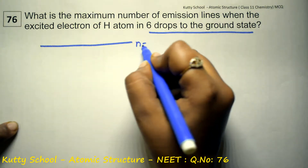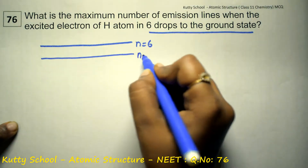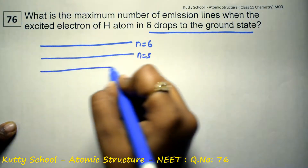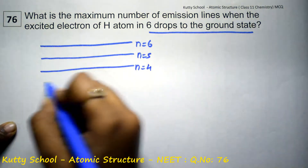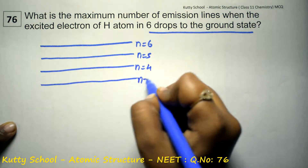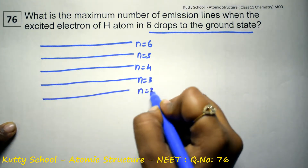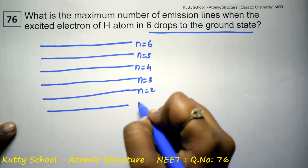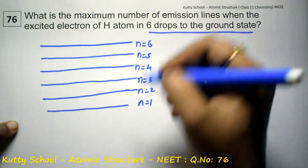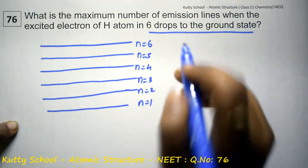On the diagram, n is equal to 6, then n is equal to 5, next n is equal to 4, next n is equal to 3, next n is equal to 2, and n is equal to 1. So, from n=6 down to n=1, how many emission lines are there — let's find out.